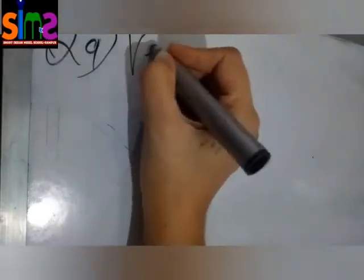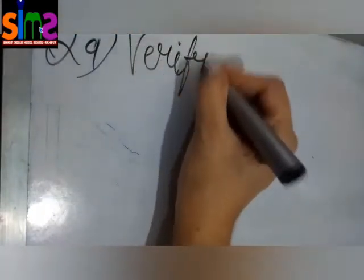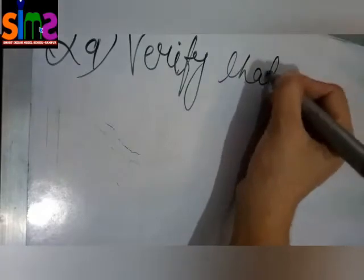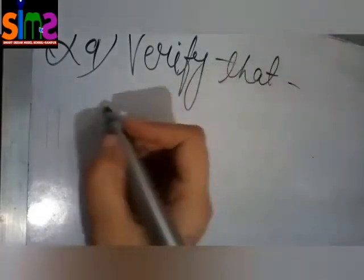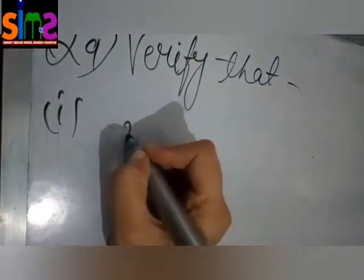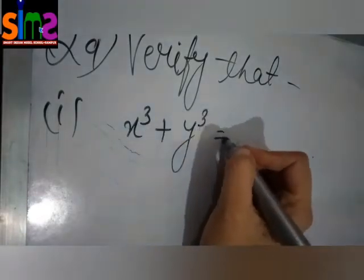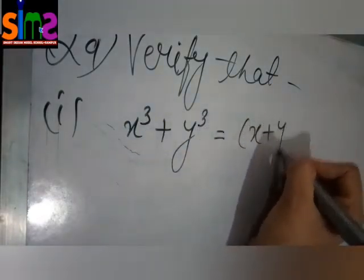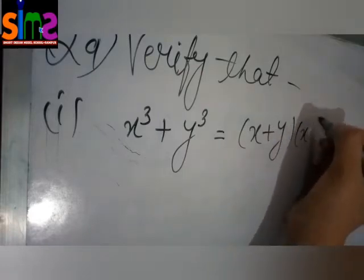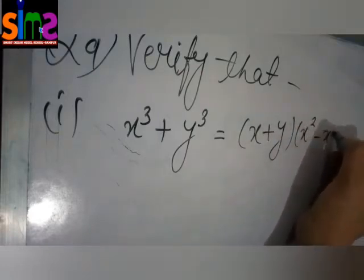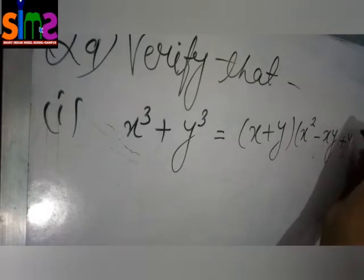So now it's time to move on to the next question. The next question is question number 9. Verify that, the very first part is given, x cube plus y cube is equal to x plus y and in second bracket x square minus xy plus y square.